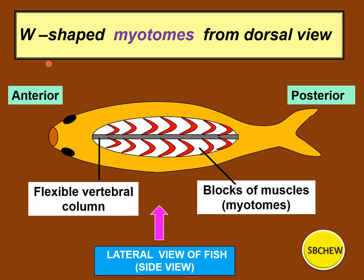This diagram shows different views of the fish. Looking down from above is the dorsal view. Looking at the fish's eyes and mouth from the front is the anterior view. Looking from the back is the posterior view. Looking from underneath is the ventral view. Looking from the side is the lateral view.